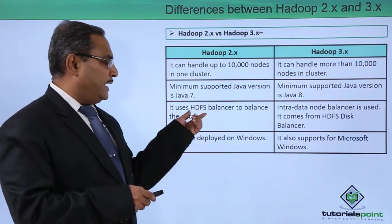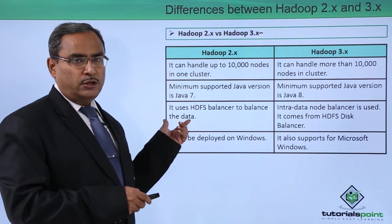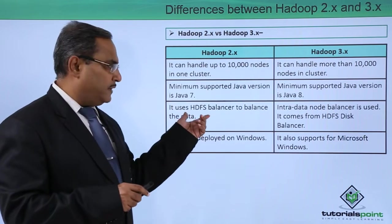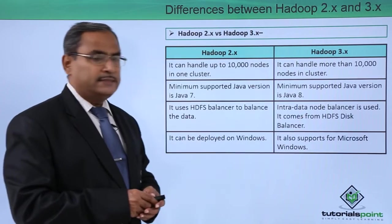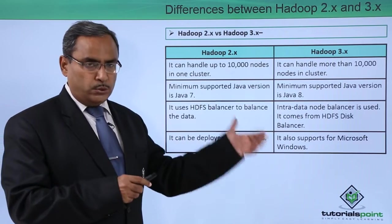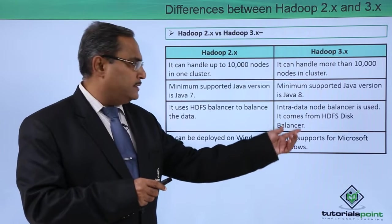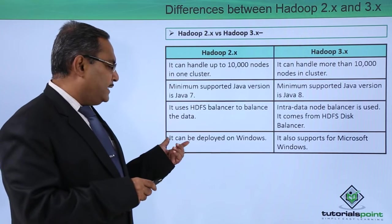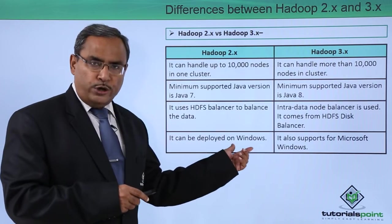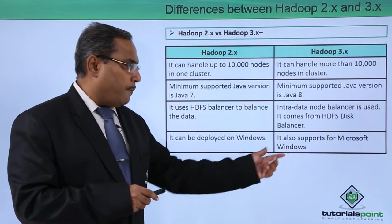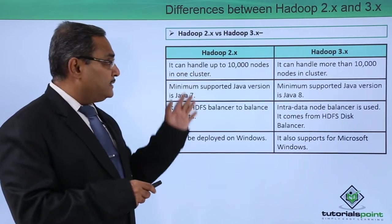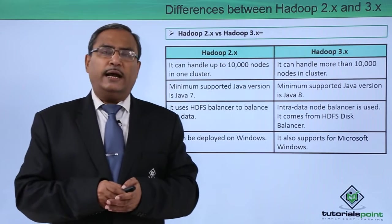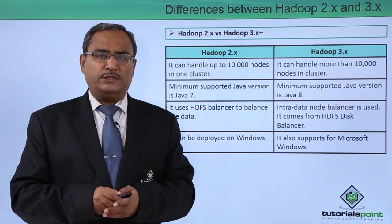Hadoop 2.x uses the HDFS balancer to balance data. In Hadoop 3.x, an intra data node balancer is used for node data balancing, which comes from the HDFS disk balancer. Hadoop 3.x can also be deployed on a Windows environment and supports Microsoft Windows. These are the main differences between Hadoop 2.x and Hadoop 3.x. Thanks for watching this video.